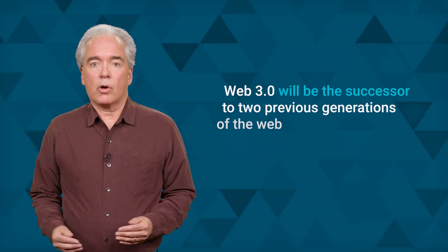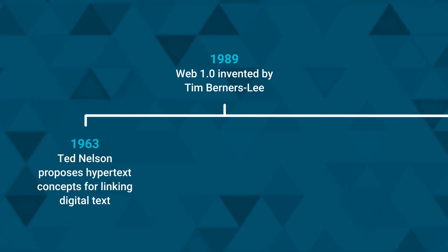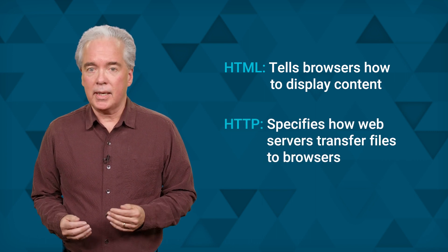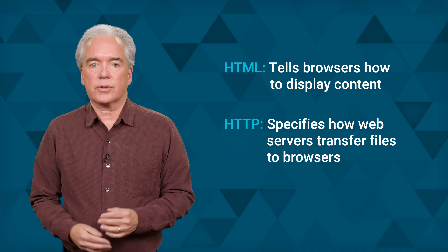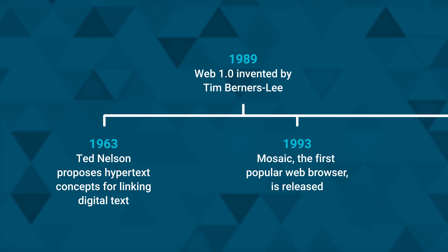If it becomes a reality, Web 3.0 will be the successor to two previous generations of the Web. The first generation, later known as Web 1.0, was invented in 1989 by Tim Berners-Lee, a British computer scientist. He applied the hypertext concept for linking digital texts, proposed way back in 1963 by American IT pioneer Ted Nelson. Berners-Lee wrote the Hypertext Markup Language, better known as HTML, which tells browsers how to display content. He also wrote the Hypertext Transfer Protocol, HTTP, which specifies how Web servers transfer files to browsers. Berners-Lee started designing software for a semantic Web that would link data across Web pages, but hardware constraints prevented its implementation. Most of the public was unaware of the Web until 1993 with the advent of Mosaic, the first popular browser, later renamed Netscape Navigator. Similar graphical browsers followed, including Microsoft Internet Explorer and Apple Safari.